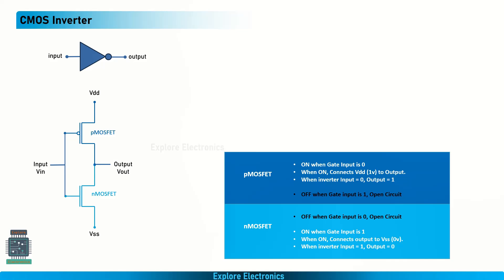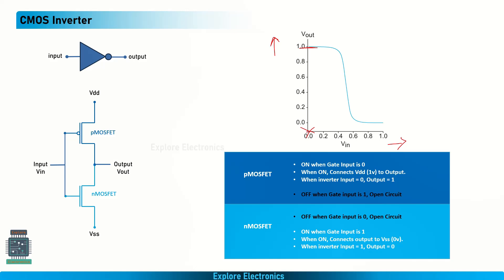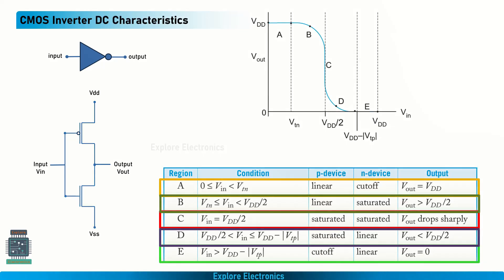If we plot Vout versus Vin, with Vin on the x-axis and Vout on the y-axis, when Vin is zero the output is maximum. As Vin increases, the output reduces, and finally it becomes zero when Vin reaches the maximum point. This is the DC characteristics of the CMOS inverter. To analyze it in a better way, we need to divide this curve into five regions: region A, region B, region C, region D, and region E.